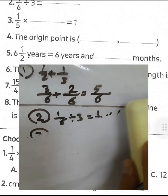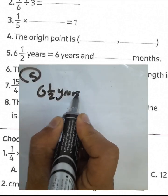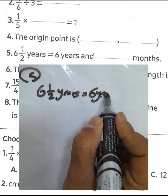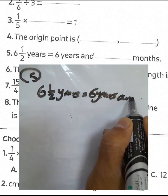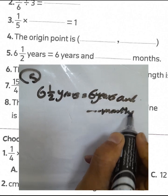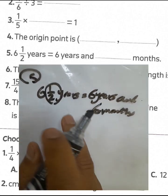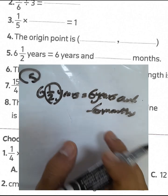Question number 5: 6 and a half years. Half a year equals 6 months, because 1 year equals 12 months. So half a year equals 6 months.